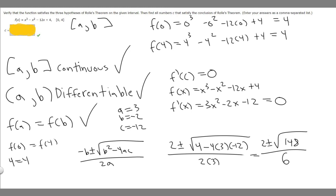So c = (2 ± √148)/6. But these are two values. We can't use the minus because if you do minus, it's not within this interval, so we can't use that. We have to use the positive one because this is two values: 2 + √148/6 and 2 - √148/6. So c = (2 + √148)/6, and this right here is the answer.